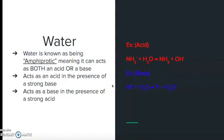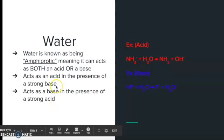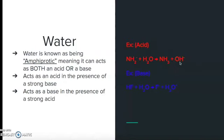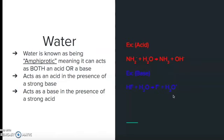Water is amphoteric, meaning it can act as either an acid or a base. When it's in the presence of a strong acid it's going to act as a base; when it's in the presence of a strong base, it's going to act as an acid. If we look at the water going from H2O to OH-, we are losing a hydrogen ion, which means it's acting as an acid. Versus in the other case, when water gains a hydrogen ion going to H3O+, it's acting like a base.